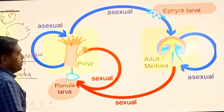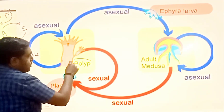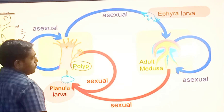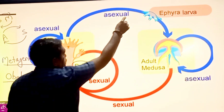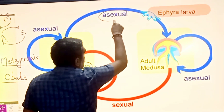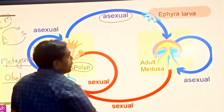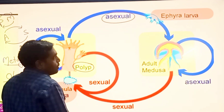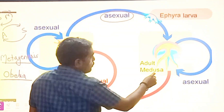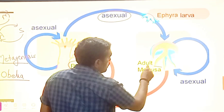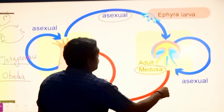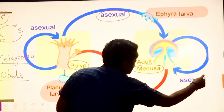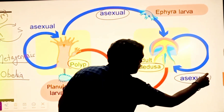Polyp gives rise to medusa. What is a polyp? It is a cylindrical sessile animal. It undergoes asexual reproduction and produces a free-swimming, umbrella-shaped adult medusa through asexual reproduction.